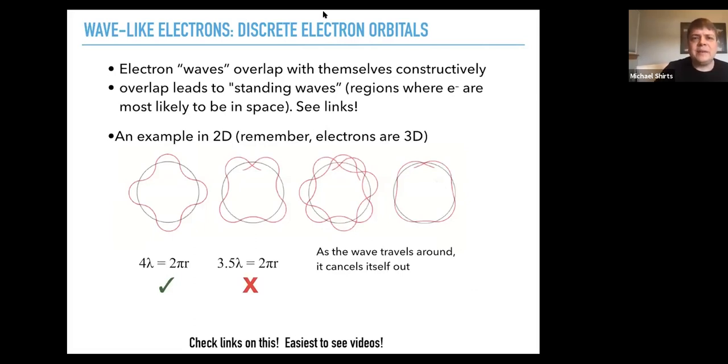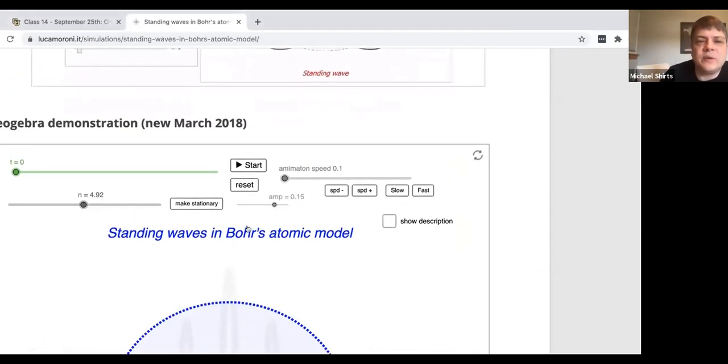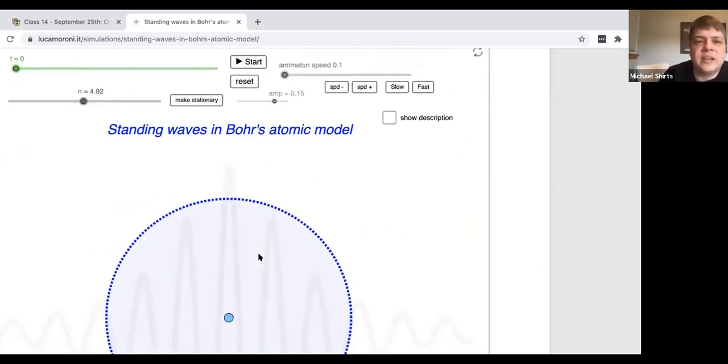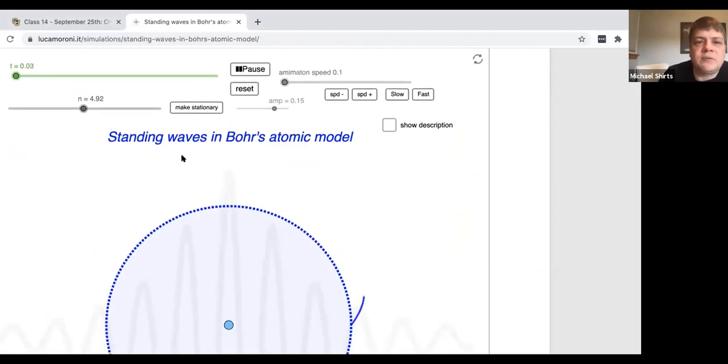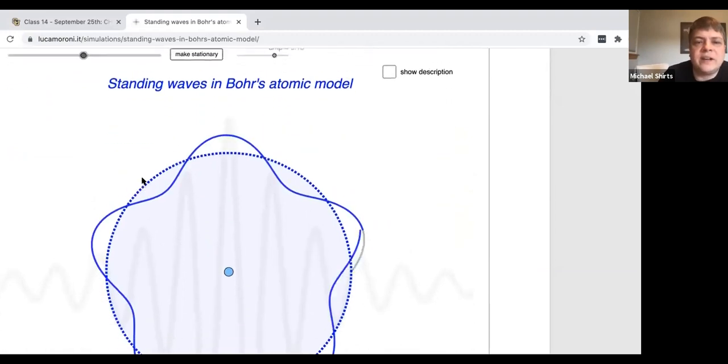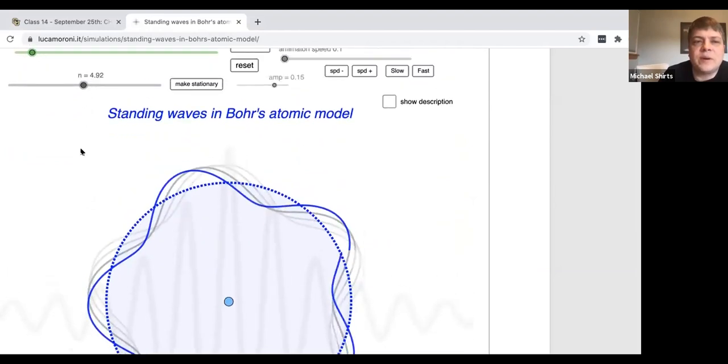So let me share this nice demo that I've linked for you to look at. Here we go. So here we have a setup, this is standing waves in Bohr's atomic model in 2D. So what it's going to do, it's going to draw a wave around this. So the wave goes around and right now the number of times that it goes around per unit wavelength is 4.92.